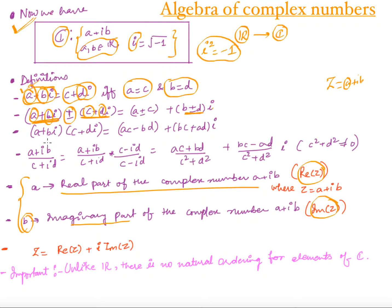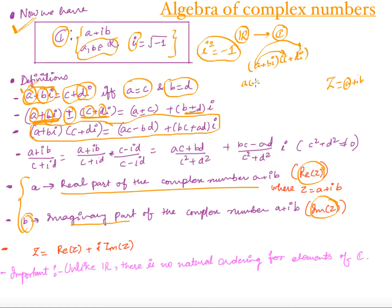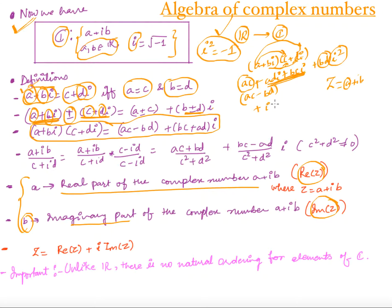To multiply two complex numbers, use the distributive law. So (a + b·iota)(c + d·iota) expands to ac plus ad·iota plus bc·iota plus bd·iota². Since iota² equals minus one, the bd·iota² term becomes minus bd. Collecting terms, the product is (ac minus bd) plus (ad plus bc)·iota.